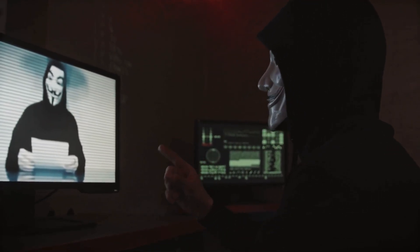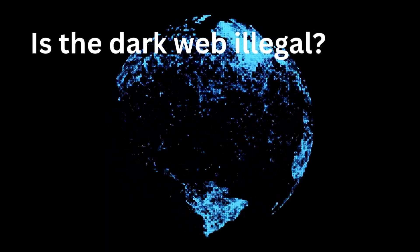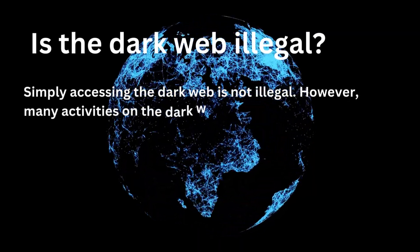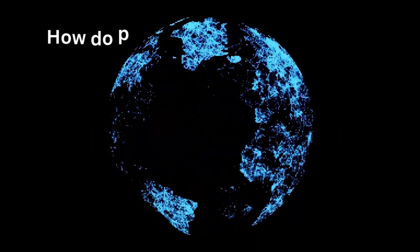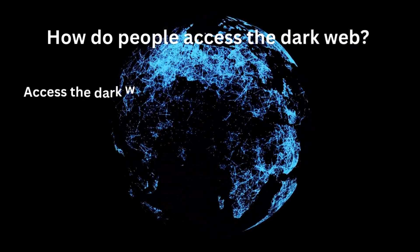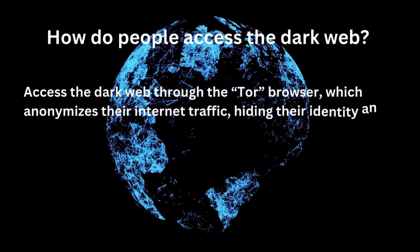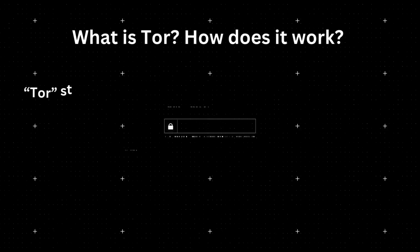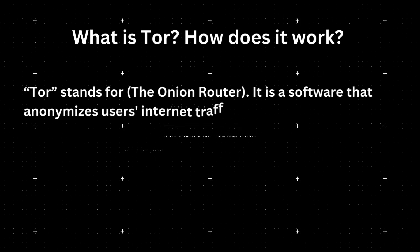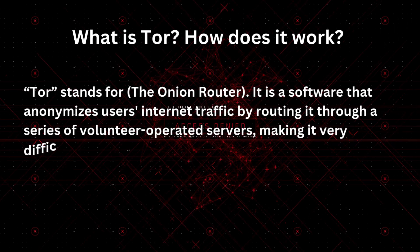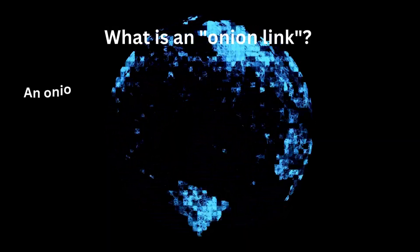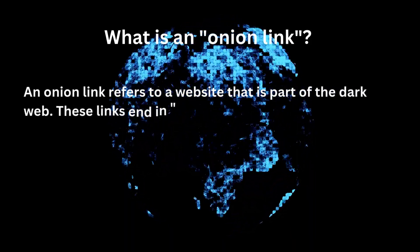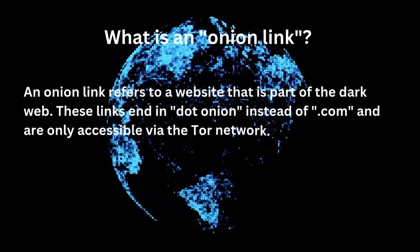Now let's answer some intriguing questions about the dark web. Is the dark web illegal? Simply accessing the dark web is not illegal; however, many activities on it — like selling drugs, weapons, or engaging in illegal services — are against the law. How do people access the dark web? Users access it through the Tor browser, which anonymizes their internet traffic, hiding their identity and location. What is Tor and how does it work? Tor stands for the Onion Router — software that anonymizes users' internet traffic by routing it through a series of volunteer-operated servers, making it very difficult to trace users' locations and online activities. What is an Onion Link? An Onion Link refers to a website on the dark web — these links end in .onion instead of .com and are only accessible via the Tor network.